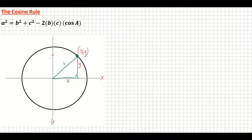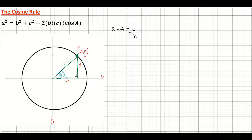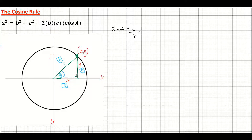Let's look at sine quickly — it's opposite over hypotenuse. Labeling up our unit circle: theta is my angle, the hypotenuse is the side opposite the 90 degrees which is 1, and opposite the angle is my O. So sine theta equals O over H, which is y over 1.